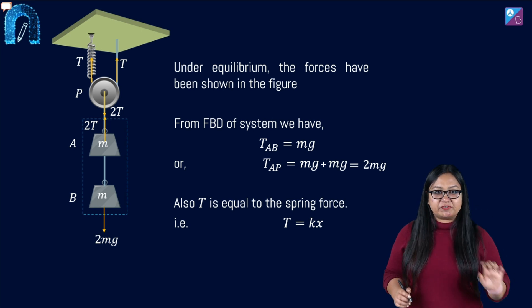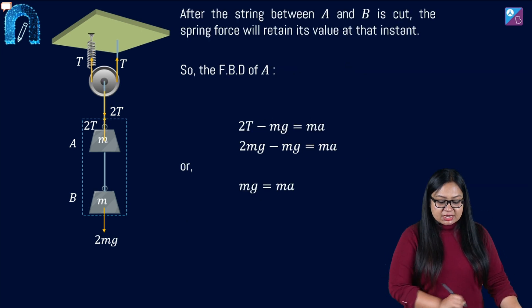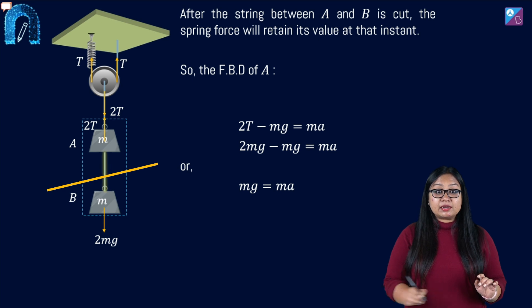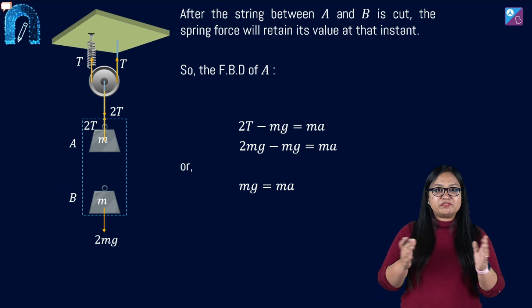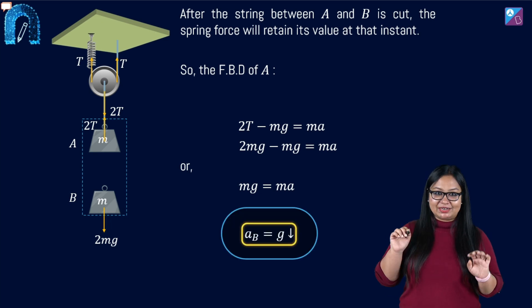So just after the string connecting A and B is cut, B becomes free now. B was only hanging due to the string. Now B is free to fall down under gravity. So acceleration of B is G vertically downwards. Now we have to find out acceleration of A.